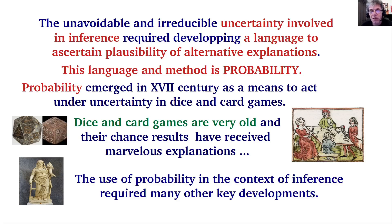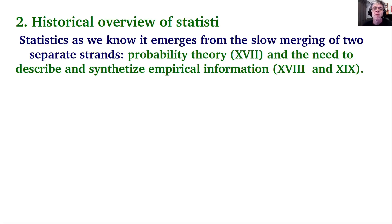But the use of probability in inference required many other developments. Statistics as we know it emerges from the slow merging of two strands: probability theory started to be developed in the 17th century, and the need to describe and synthesize increasing amounts of empirical information that started to be collected in the late 18th century and even more in the 19th century.